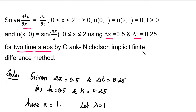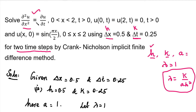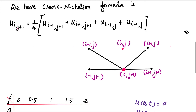To use the Crank-Nicolson method, we need the k value, a value, and lambda. We assume lambda equal to 1. The formula is lambda equal to k divided by a times h squared. In this question, delta x is h, and delta t is k. From the equation ∂u/∂t, we get a = 1. So lambda value is 1.